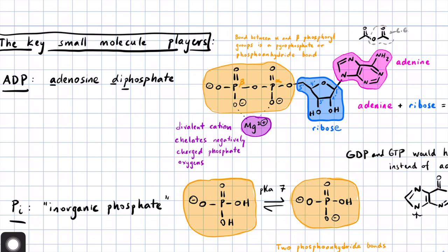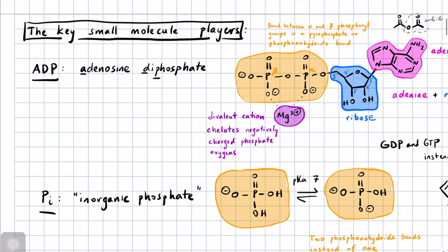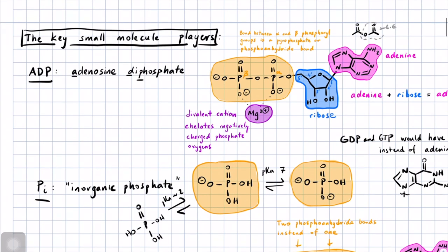Inorganic phosphate is a fairly stable leaving group. You can tell it's a good leaving group because it is the conjugate base of a strong acid. If you take a look at phosphoric acid, the first pKa is around 2. So it could be a good leaving group and a good nucleophile, and we're going to see both characteristics in these metabolic reactions.